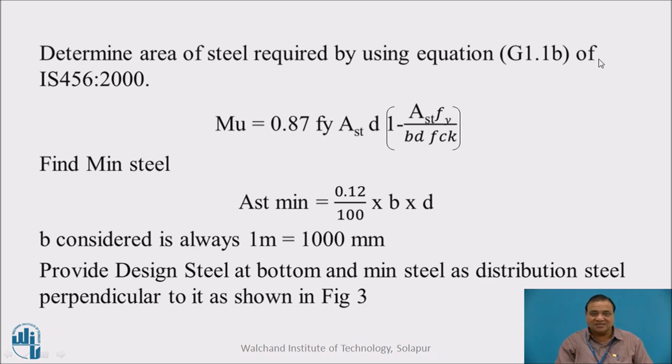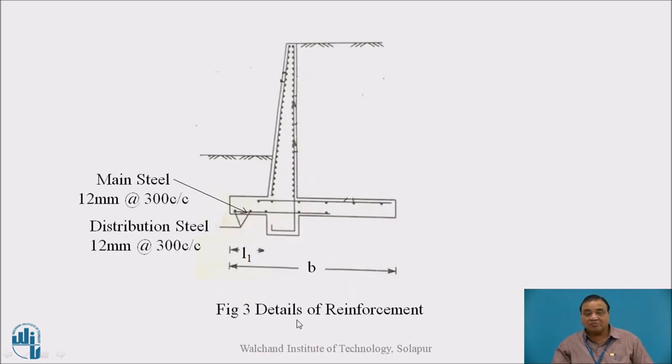Determine area of steel by using the equation. If MU is less than MU limit, we will have under-reinforced section, then area of steel is determined by this equation. It is also compared with Ast minimum because distribution steel is Ast minimum, 0.12/100 × B × D, where B is always taken 1 meter. Provide design steel at bottom and minimum steel as distribution steel perpendicular to it as shown in Figure 3. In this particular case, the design steel is less than minimum steel because the span L1 is less, therefore we have provided same steel on both directions.